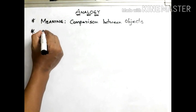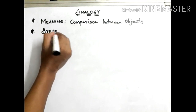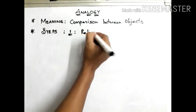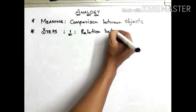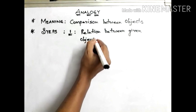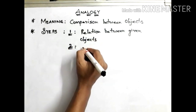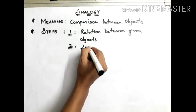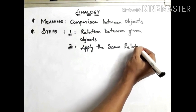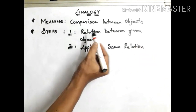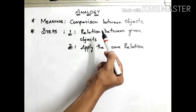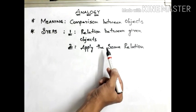How to solve analogy — it indicates two steps. First, find the relation between the given objects. Then we have to apply the same relation to the other objects which are given in the question. So analogy carries two steps: first, find the relation between given objects, and second, apply the same relation.